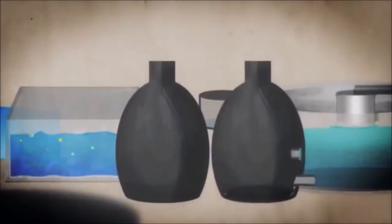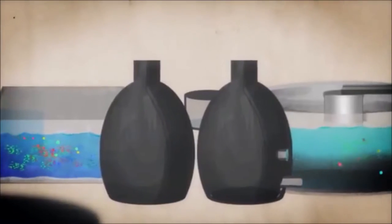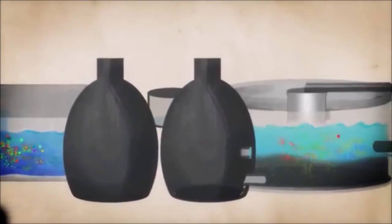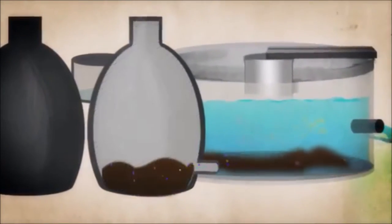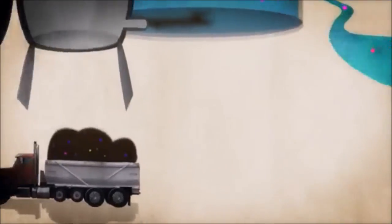There are around 3,000 pharmaceutical compounds on the market, and treatment plants deal well with some and not so well with others. So some drugs always make it into the rivers, and some remain in the treatment sludge, which is often used as fertilizer in agriculture.